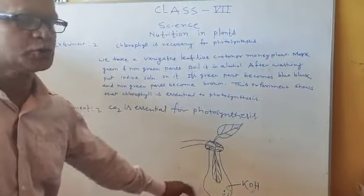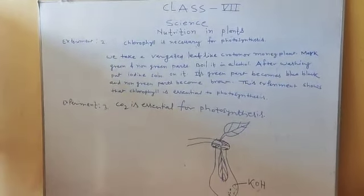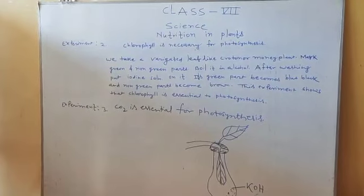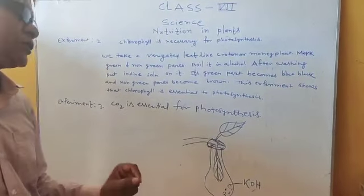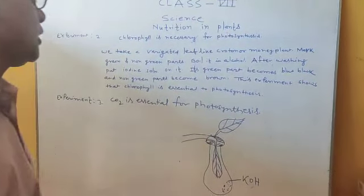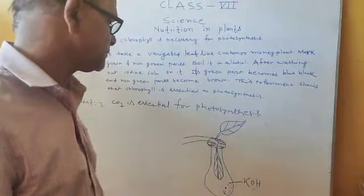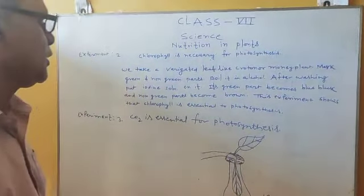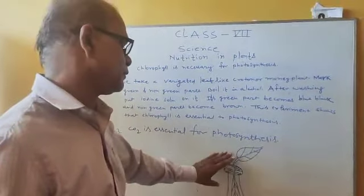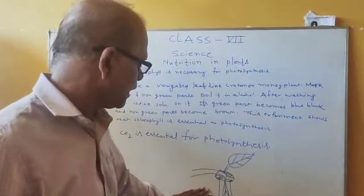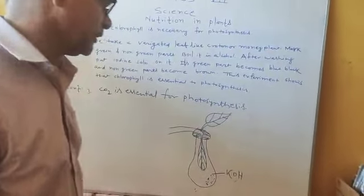Why do we put KOH solution? Because KOH solution absorbs carbon dioxide — CO₂ is absorbed by KOH solution. Now put it in sunlight for 5 to 6 hours.